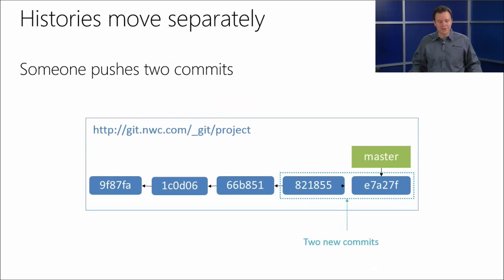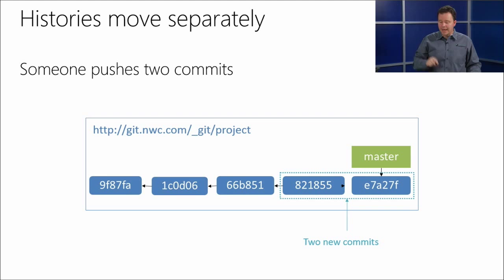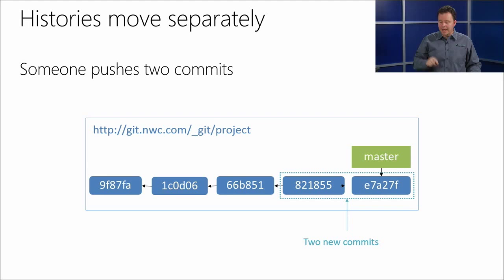When you clone a repo, you get your own master created for you, plus origin/master pointing to the same commit. Now suppose somebody else pushes two new commits to the server — on the remote, master has now moved. But on your machine, your local master has also moved beyond origin/master, showing the divergence between your local work and the remote.